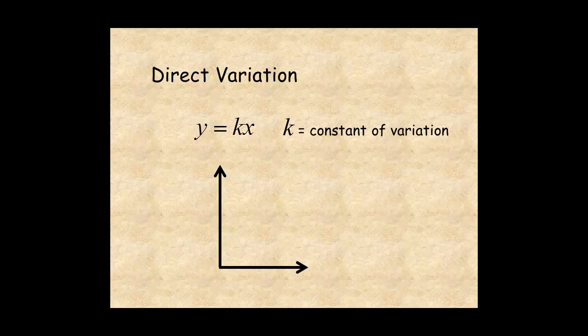The graph of a direct variation is a line that passes through the origin. The slope of the line is k, the constant of variation.